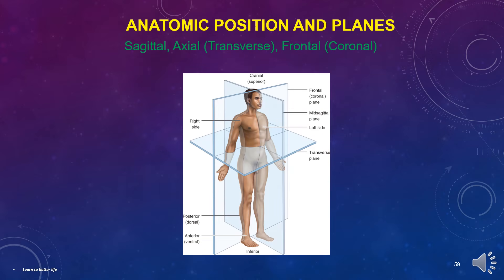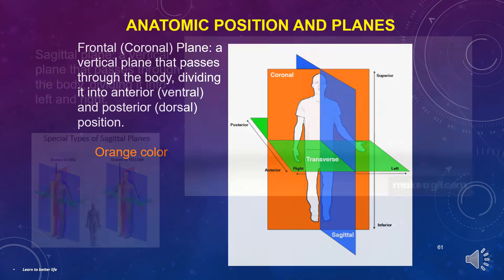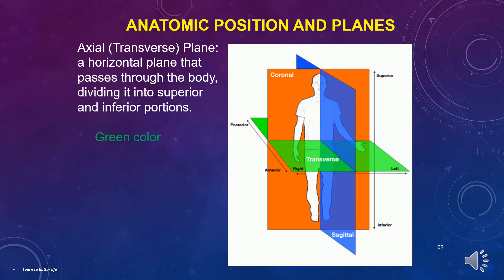There are three planes in human anatomy: sagittal, axial or transverse, and frontal or coronal. The sagittal plane is a vertical plane that passes through the body, dividing it into left and right. The coronal plane is a vertical plane that divides the body into anterior (ventral) and posterior (dorsal) positions. The axial or transverse plane is a horizontal plane that passes through the body, dividing it into superior and inferior portions.